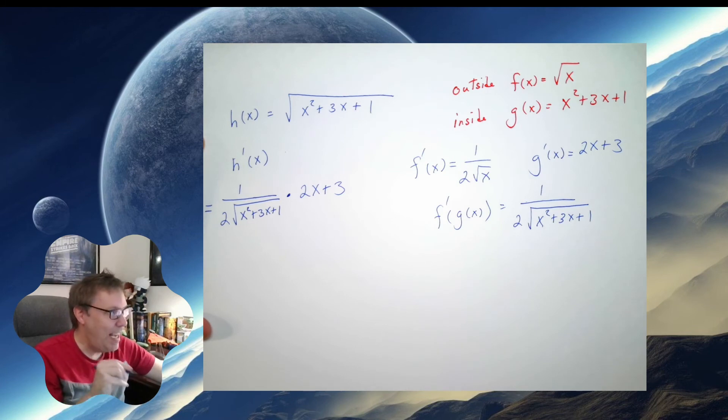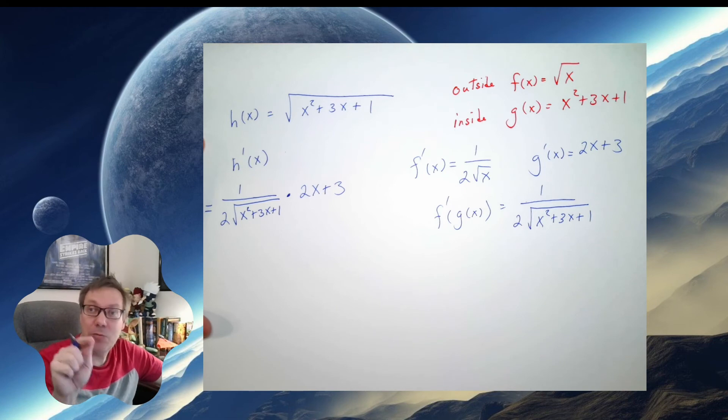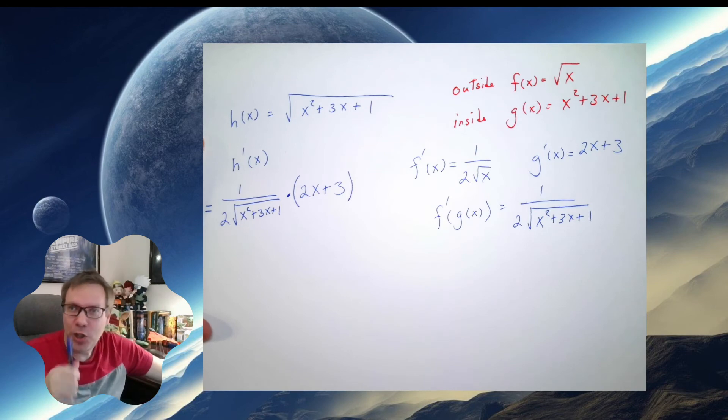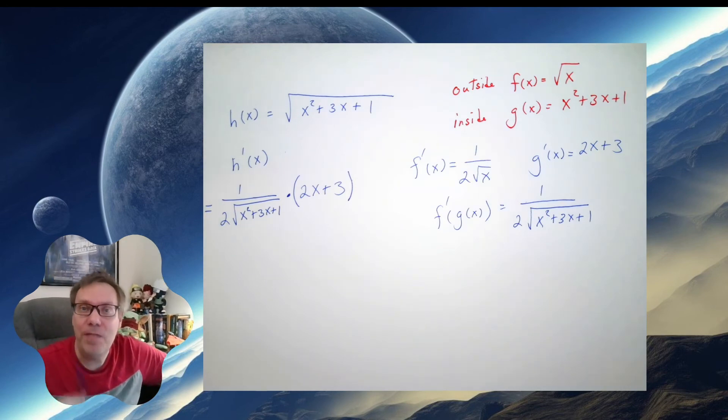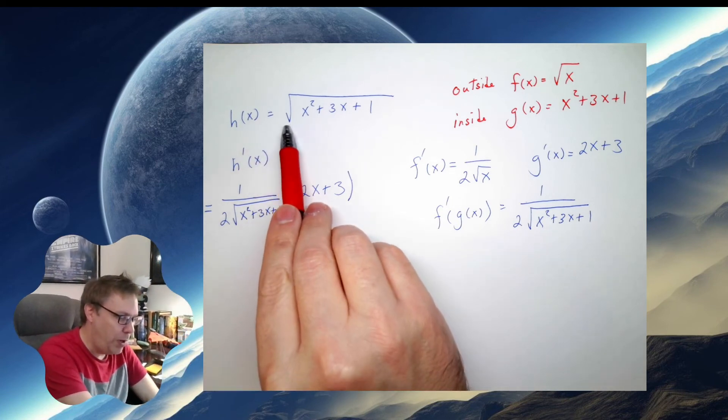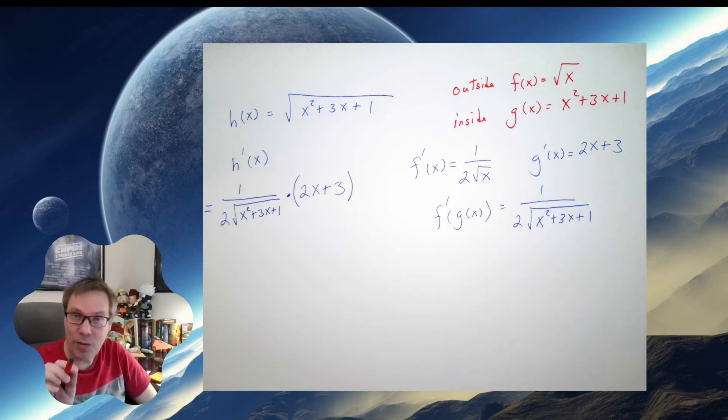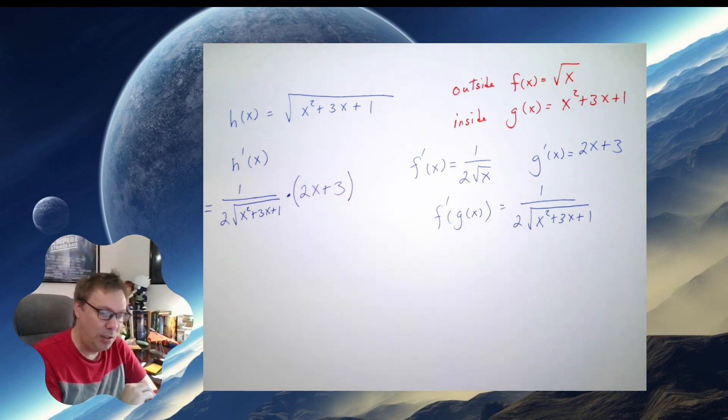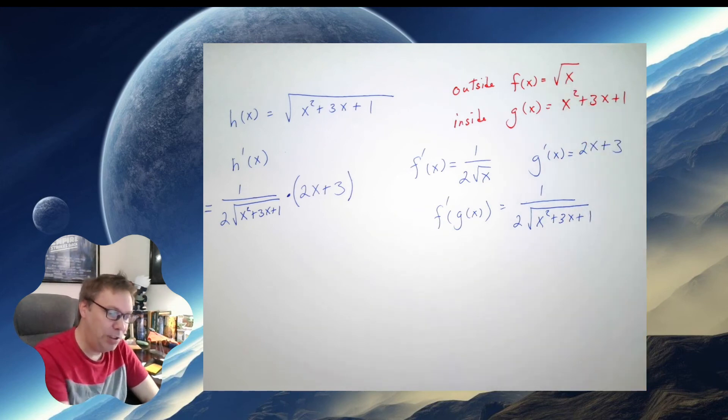Now, the way I have it written is actually incorrect. Be really careful about this. Make sure that you put your parentheses there. That's very important. So another small recap. The square root of—hear that word of again?—x squared plus 3x plus 1. So I know the square root is my outside function. And the thing that follows the of is the inside.